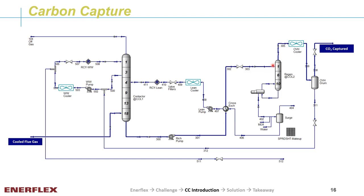CO2 is stripped off at the top of the regenerator. After the overhead cooler, condensed water is separated out in the overhead drum, and CO2 is captured as vapor. As the rich amine falls down the regenerator and CO2 is stripped off at the reboiler, it has less CO2. The lean amine first goes through a surge drum, then the cross-exchanger, and finally it is pumped to the contactor after being cooled — forming a closed amine loop. A water wash section is added at the top of the contactor to minimize amine loss.